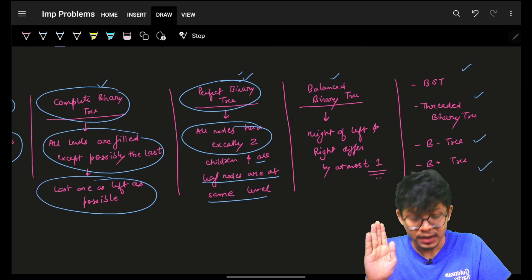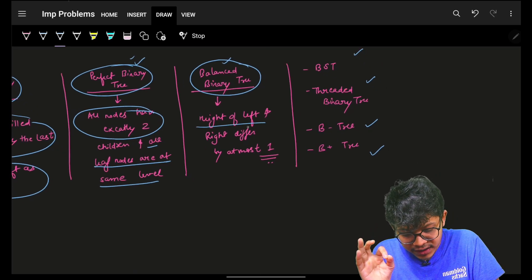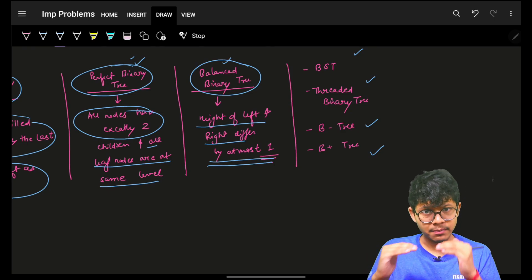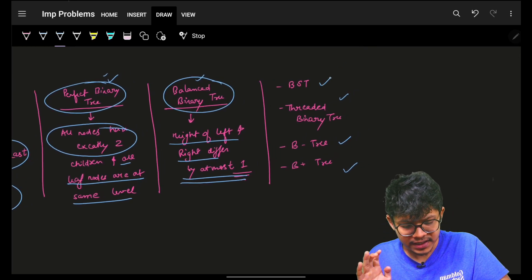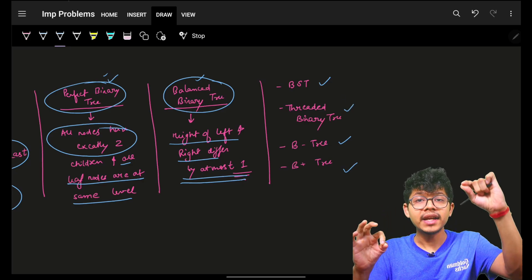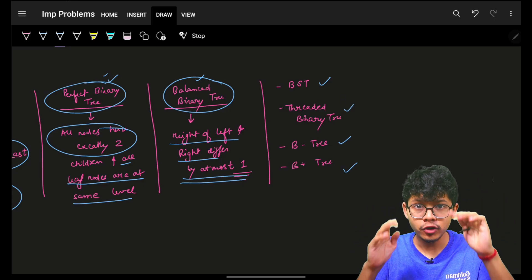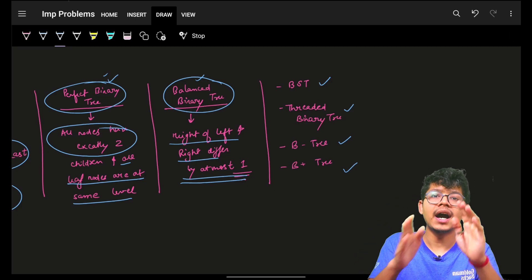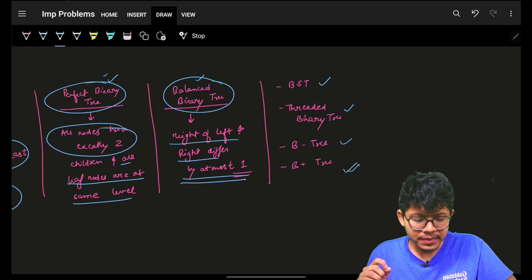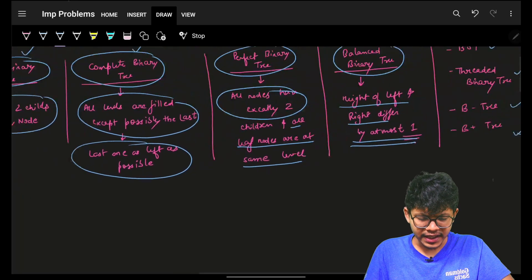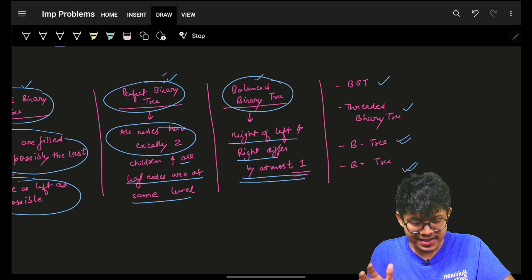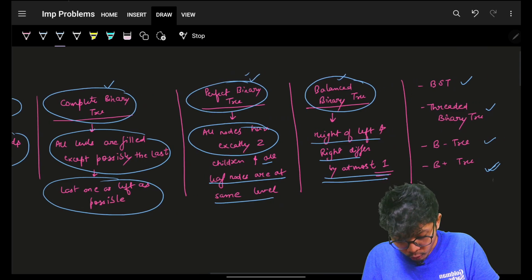A balanced binary tree has the height difference between the left and right subtrees at most one. A BST has the left node smaller and the right node larger. A threaded binary tree is when you make a thread to go to the parent — look up Morris traversal for that. B and B+ trees are used for indexing; you can Google those.